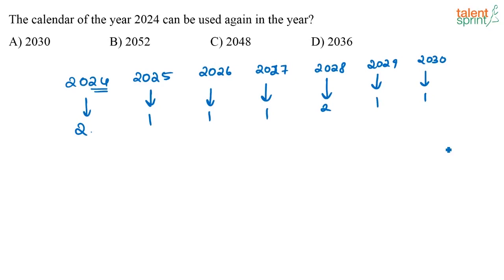If I look from 2024 to 2030, how many odd days are there in total? 2 plus 1 is 3, then 4, 5, 6, 7, 8. So it is not 7 or a multiple of 7. Therefore I can very clearly say that 2024 and 2030 do not have the same calendar.